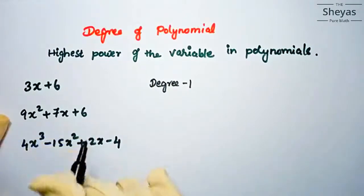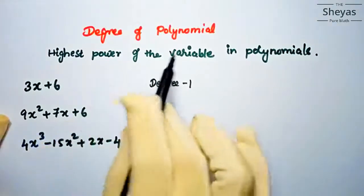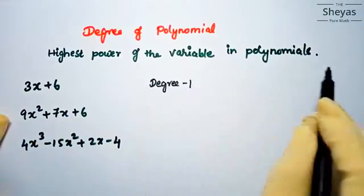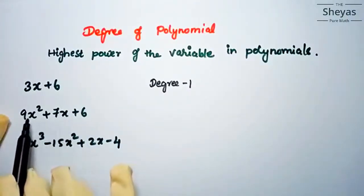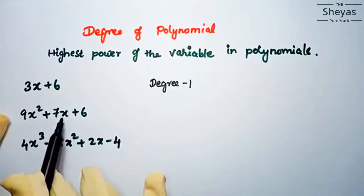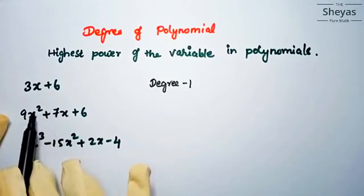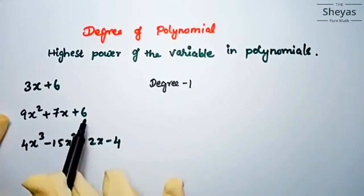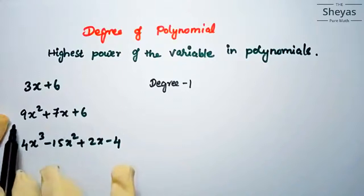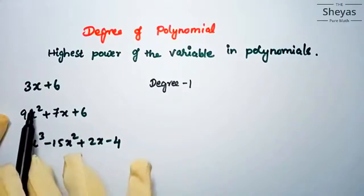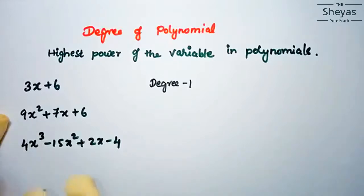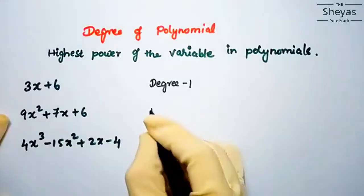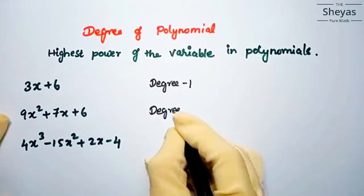In the next example, we look at the highest power of the variable. Here we have x with power 1 and x with power 2. Since we take the highest power, the degree of this polynomial is 2.